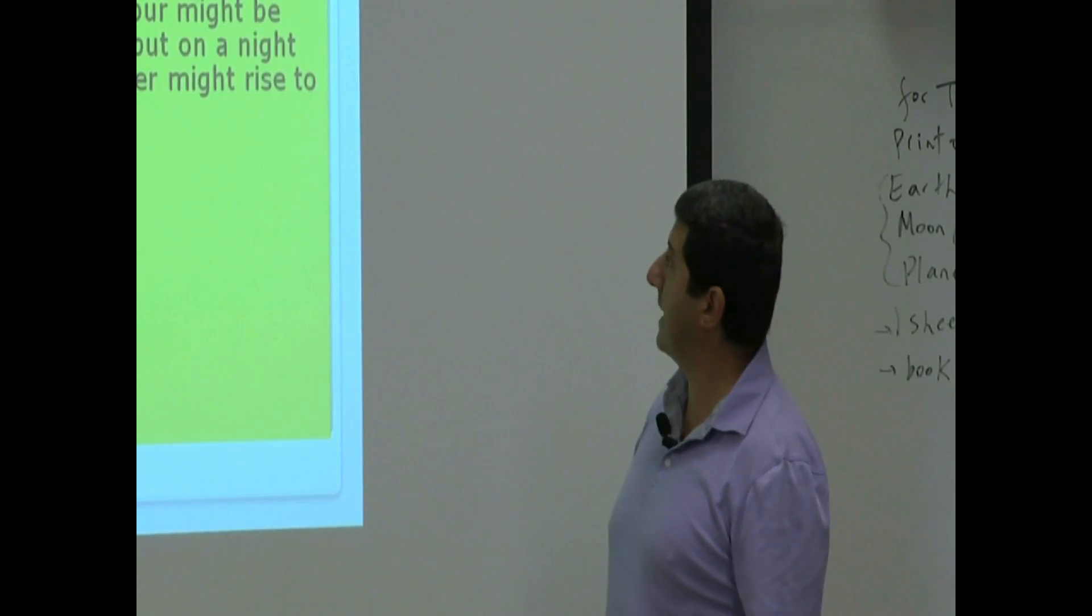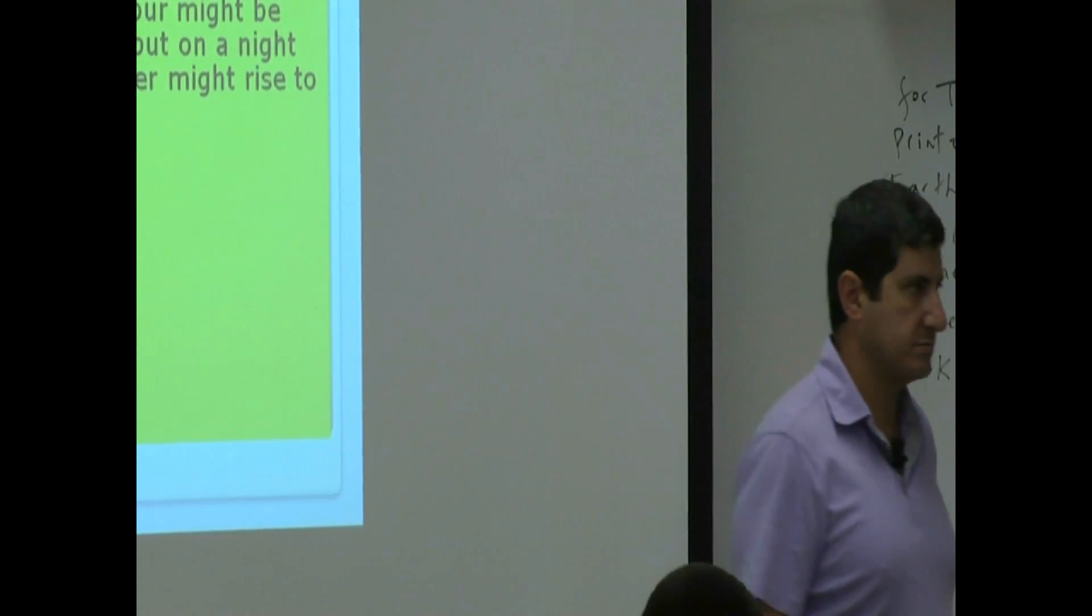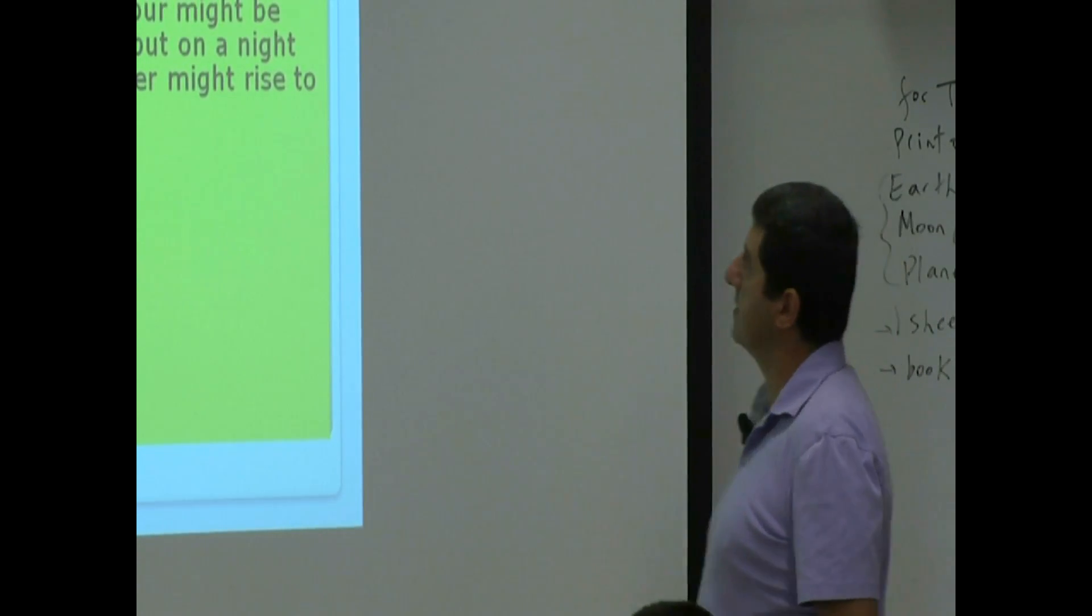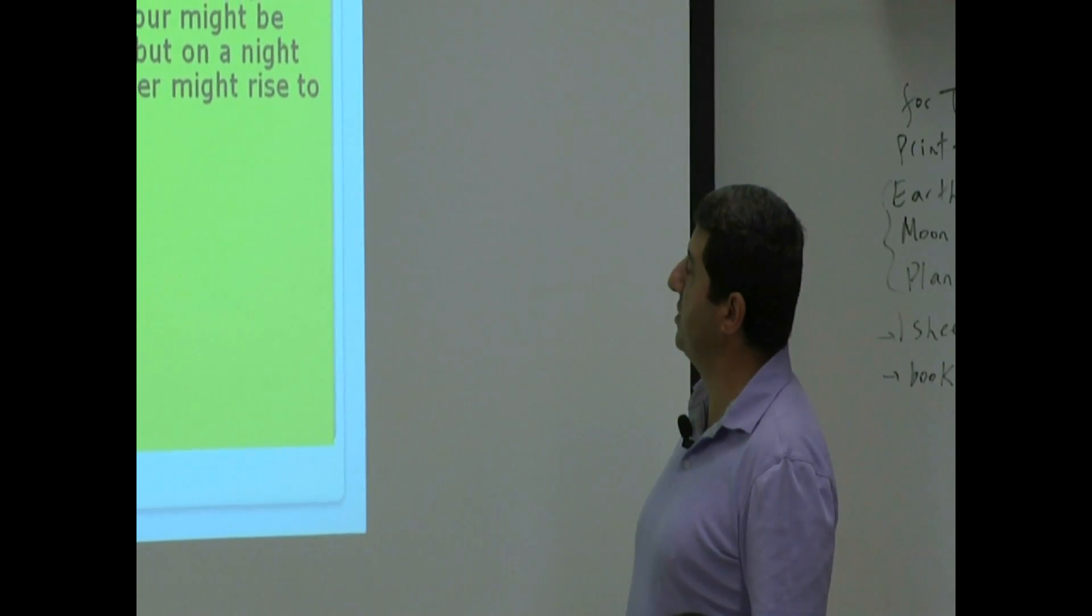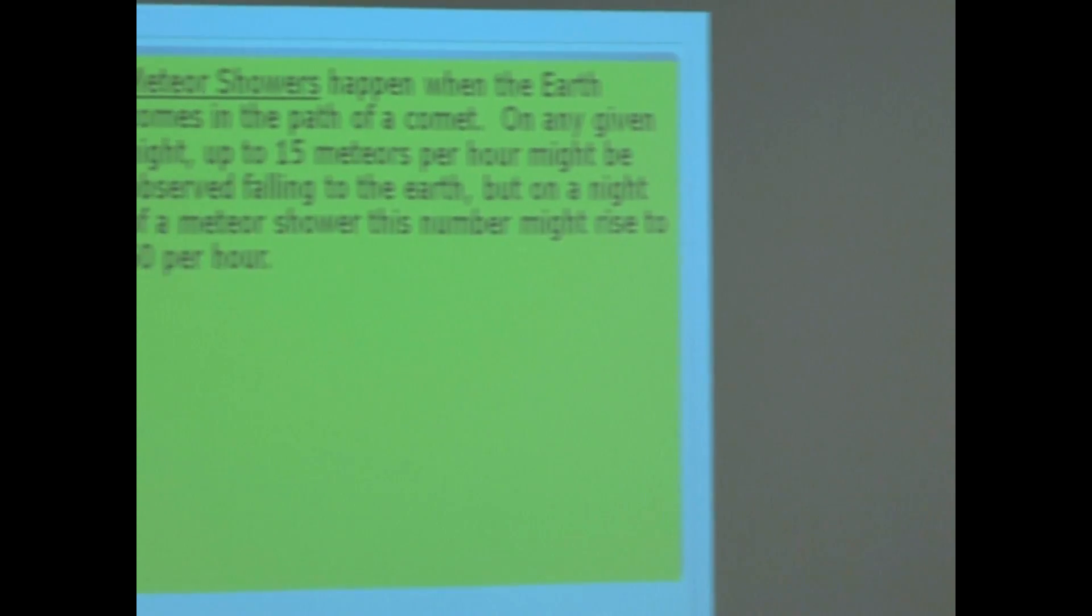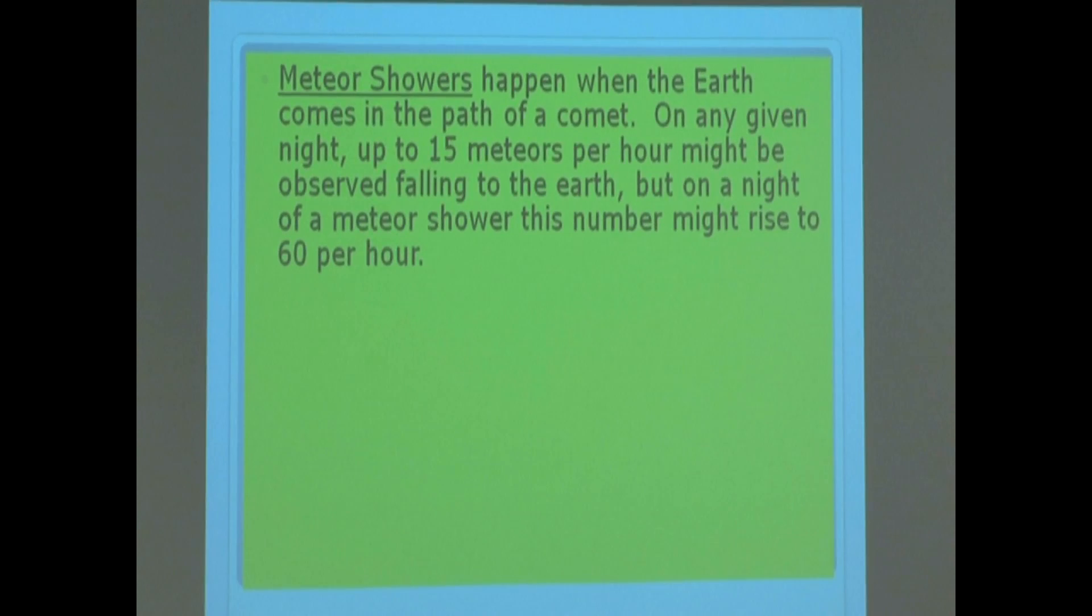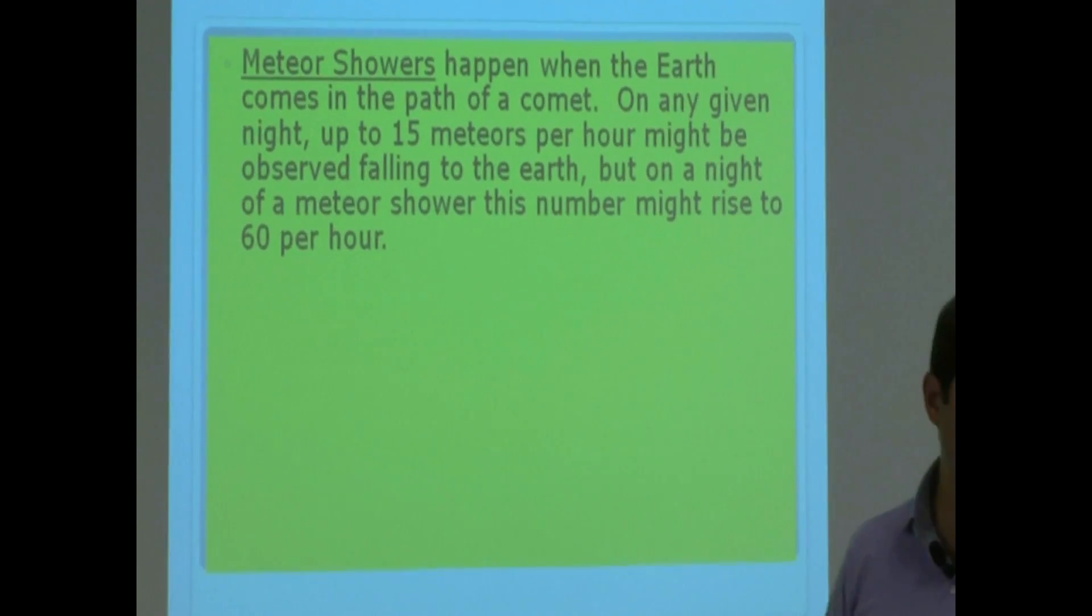Meteor showers happen when the Earth comes in the path of a comet. On any given night, up to 15 meteors per hour might be observed falling to the Earth. But unless you know it's happening, it's kind of hard to see it. But on the night of a meteor shower, this number might rise to 60 meteors per hour.